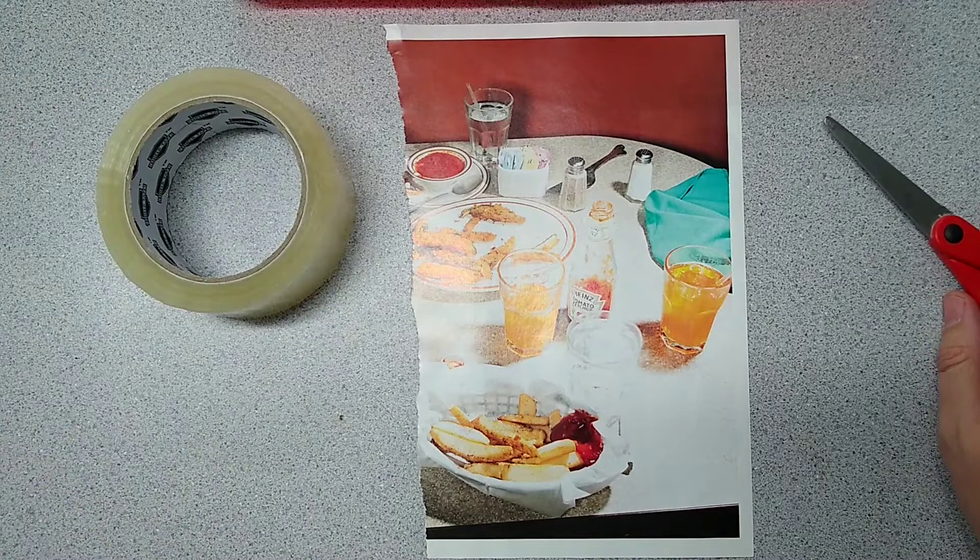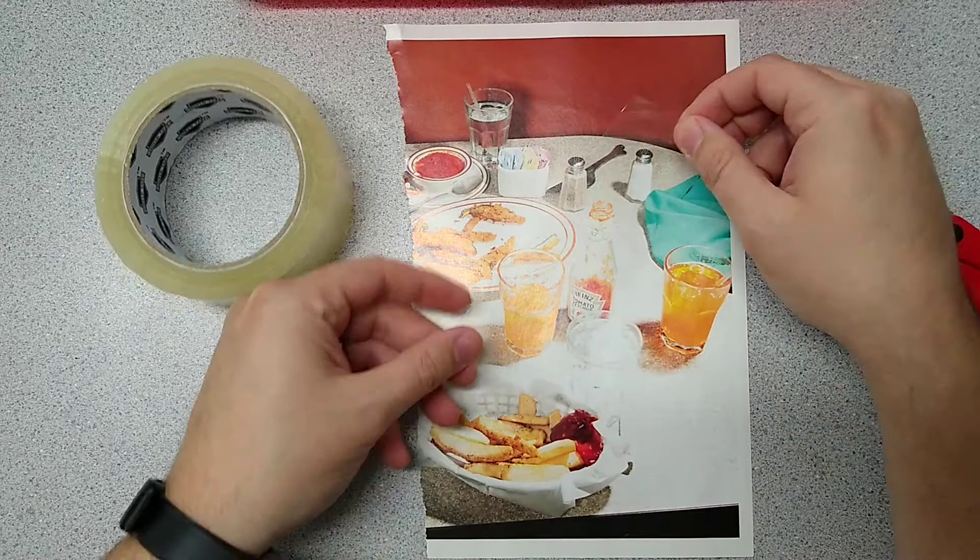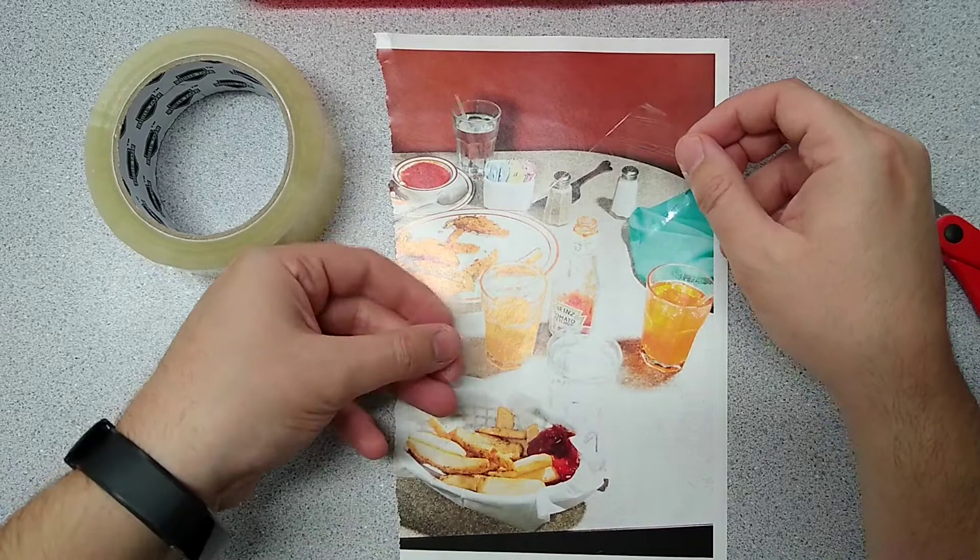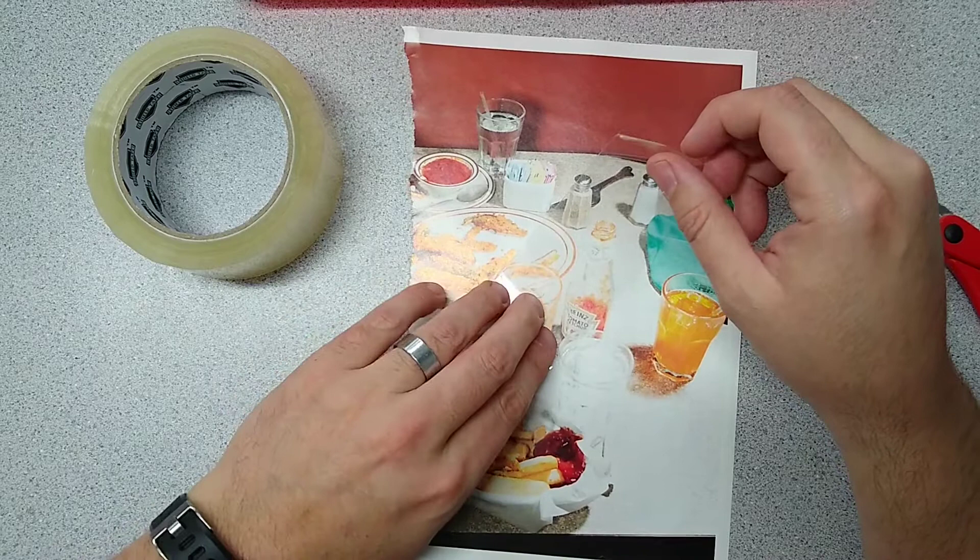All right, and then we're going to take a piece of our packing tape and we are going to arrange it, put it on our picture where we want it. I think I'm going to try and get the ketchup and the salt shaker and this drink. Something like this.